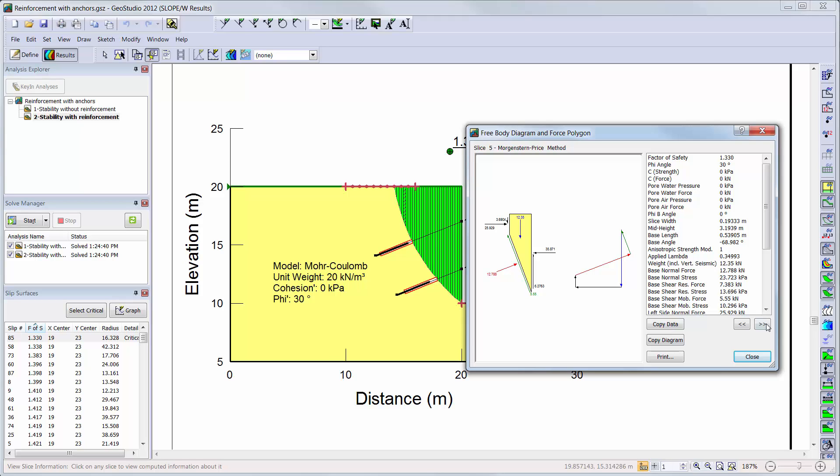If we move to the slice whose base is intersected by the reinforcement, we can see that there is a resistance force value of 300 kN as expected. If the anchors were set to have a distributed force in the key in reinforcement loads, this value would reflect this distribution over all of the slices below the anchors as the force would be distributed throughout the slices influenced in each anchor.